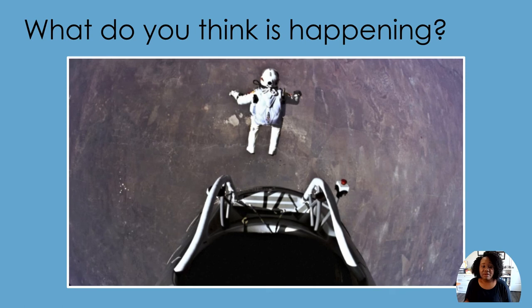What do you think is happening in this picture? This is a picture of Felix Baumgartner falling from the Stratos before he opens his parachute. The brown you see below him is Earth.